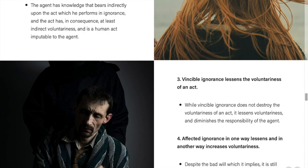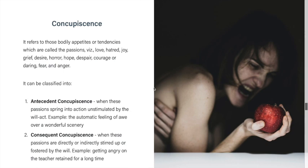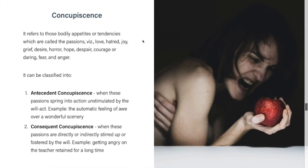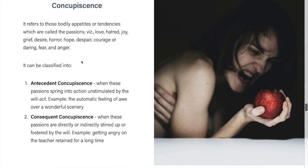Next we have concupiscence. Concupiscence refers to those bodily appetites or tendencies called the passions — such as love, hatred, joy, grief, desire, horror, hope, despair, courage, fear, and anger. They are the bodily inclinations and tendencies that incline us to certain things; they are also called the passions or emotions. Concupiscence can be classified as either antecedent or consequent.